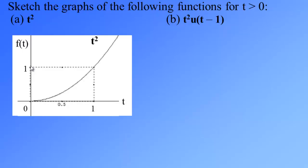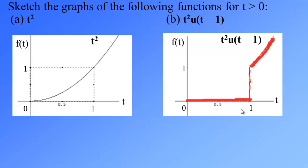And the effect of multiplying t² with u(t-1) is the portion of the graph before t equals 1 is cut off. So the final graph will look like this: the graph is y equals 0 from t equals 0 to 1, and then at t equals 1 it shows up to 1, and then afterwards it follows t² onwards.